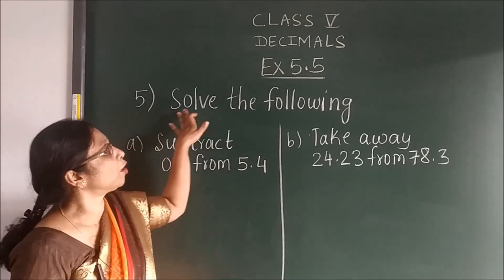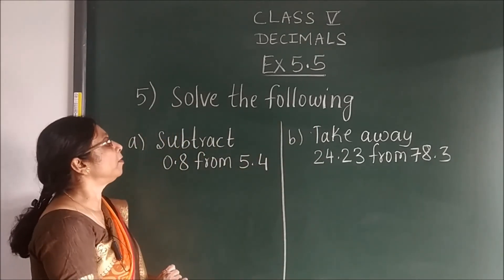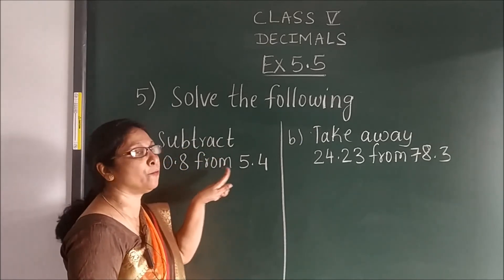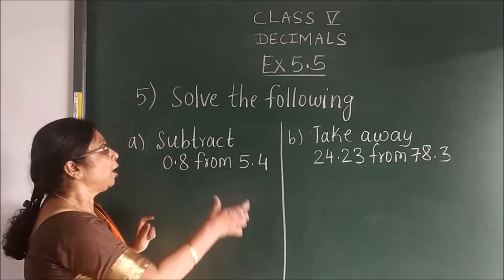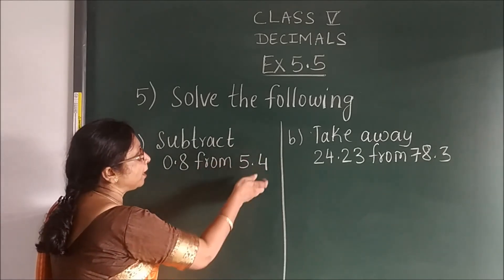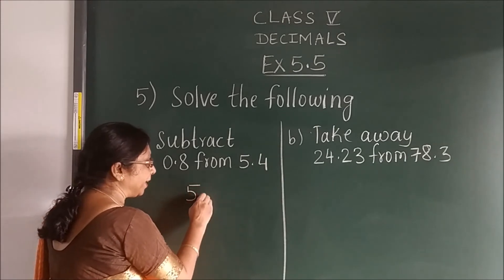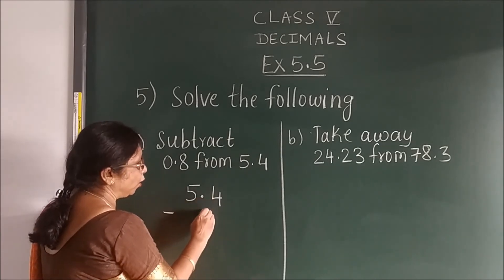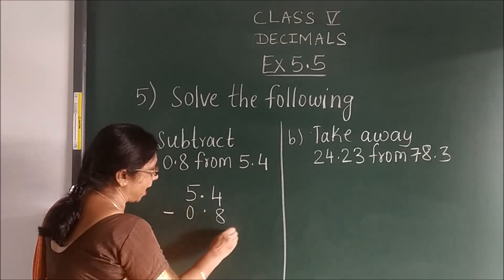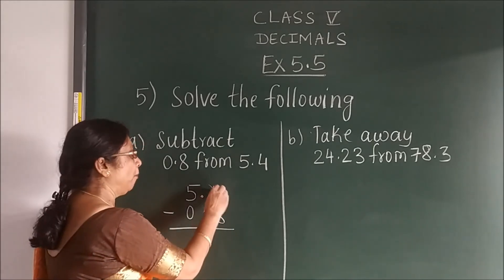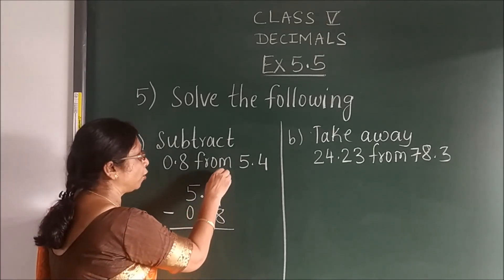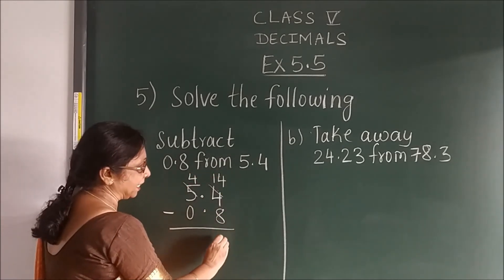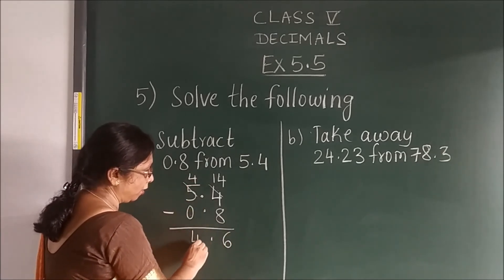Question number 5: solve the following. It says subtract 0.8 from 5.4. When 'from' comes, the second part — that is 5.4 — you write first. Then subtract sign, and then 0.8 below. Where there is no number, put 0. Now carry out the subtraction: from 4, 8 goes no — borrow. This becomes 14, this becomes 1 less. 14 minus 8 is 6. 4 minus 0 is 4.